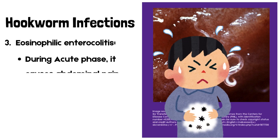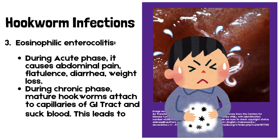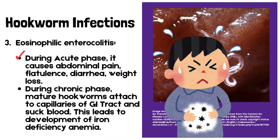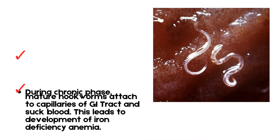Number 3: Eosinophilic enterocolitis. During the acute phase, it causes abdominal pain, flatulence, diarrhea, and weight loss. During the chronic phase, mature hookworms attach to capillaries of the GI tract and suck blood, which leads to the development of iron deficiency anemia.